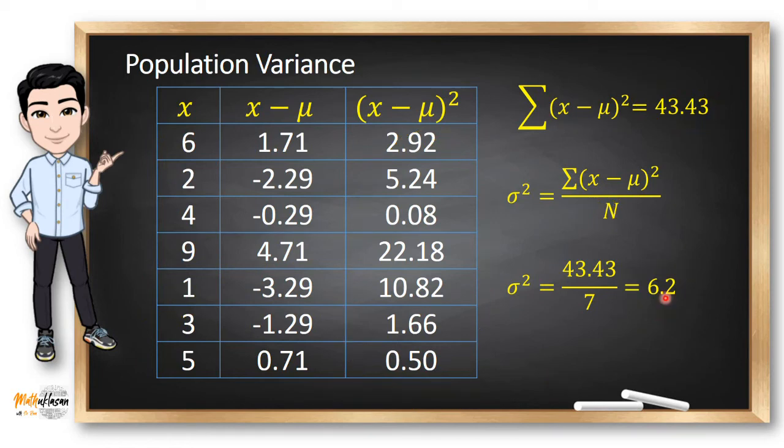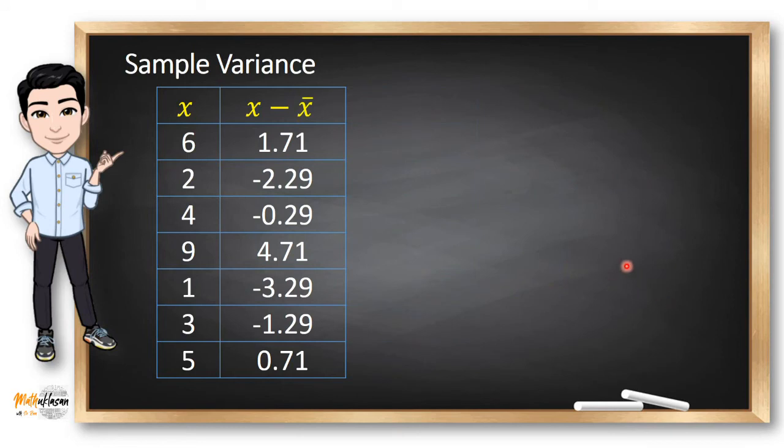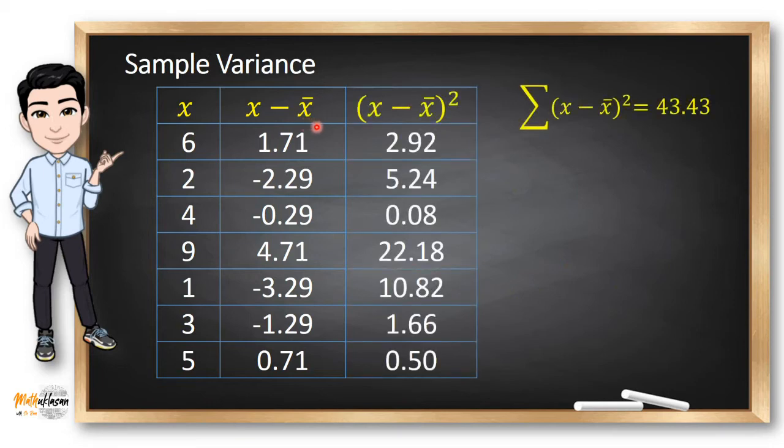How about the sample variance? Since it's just the same, we just need to find or change the symbol μ to x̄ because we refer to the sample mean, and change the denominator from capital N to n minus 1. Since n is still 7, then the sample variance for the data is 7.24. You just need to divide 43.43, which is the same value as in the previous example, and you just need to subtract 7 with 1, and then you have here 6. So 43.43 divided by 6 is 7.24.